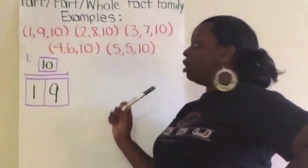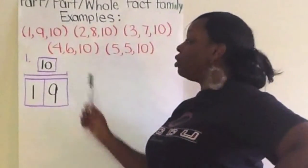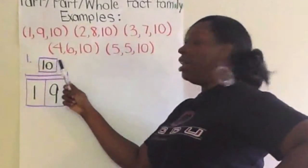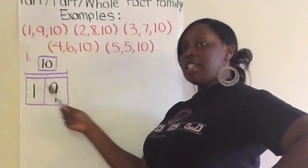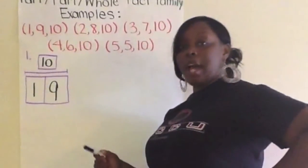So, if this is your homework journal, you will put number 1, you will draw your part, part, whole map. And if we're starting with 1, 9, and 10, you'll write the parts in the boxes for your parts and put your whole number up top.